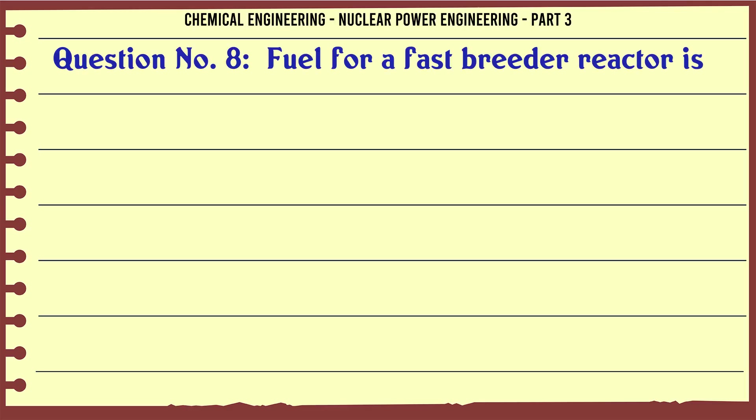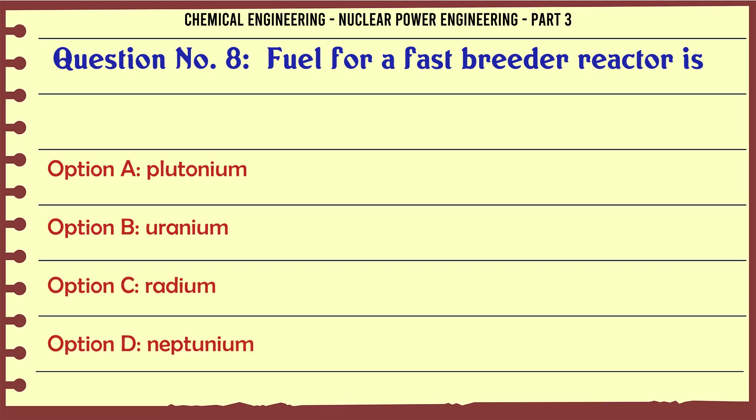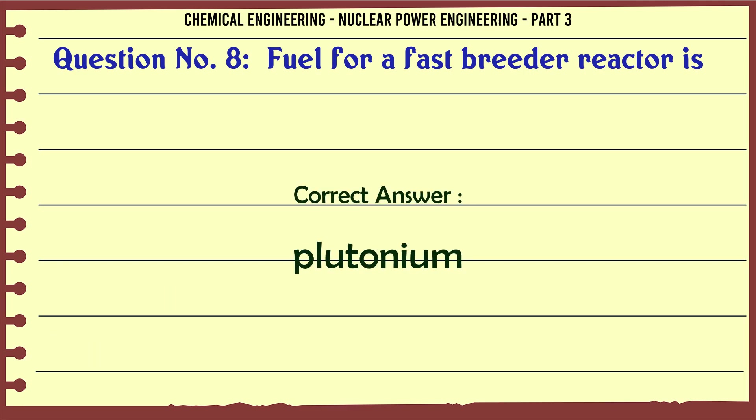Fuel for a fast breeder reactor is plutonium. The correct answer is plutonium.